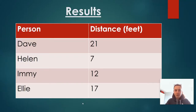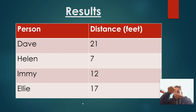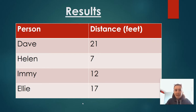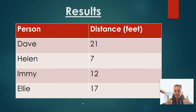So here are the results. Dave — that's my dad — threw his 21 feet, so we had to put his feet 21 times. And then Helen, who is my mum, she had seven feet. My sister Amy had 12 and the other sister had 17. So the winner was Dave, my dad. Well done, dad — of course he won.